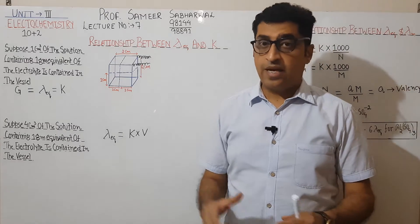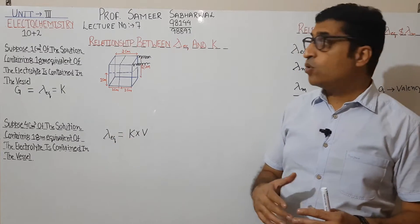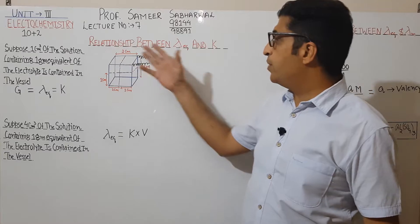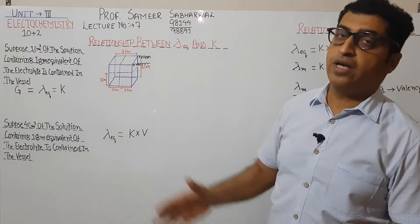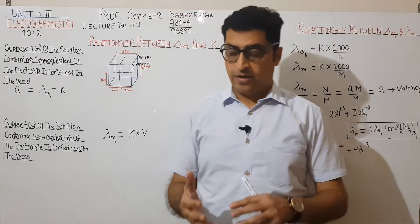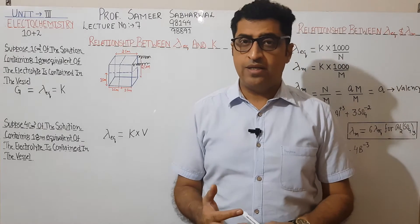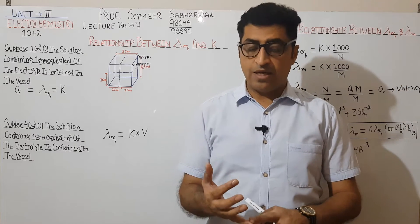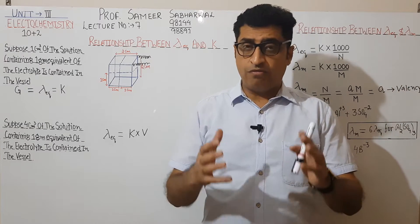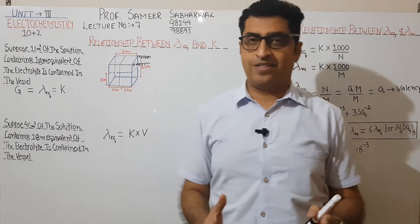In this lecture I'm going to discuss the relationship between lambda equivalent and K. Lambda equivalent is the conductance of 1 gram equivalent of electrolytes. Whenever we have 1 gram equivalent, the conductance of that 1 gram equivalent of electrolyte is known as equivalent conductance.